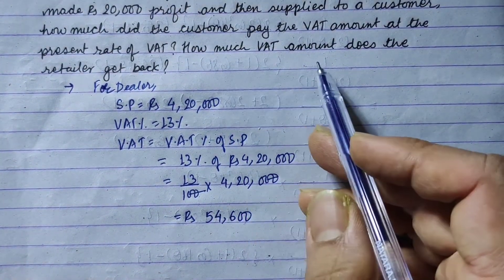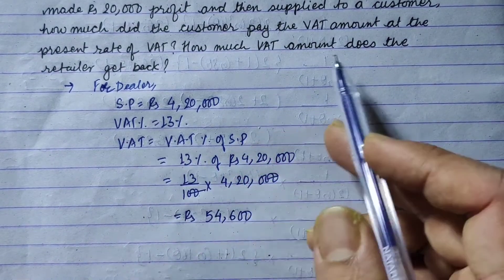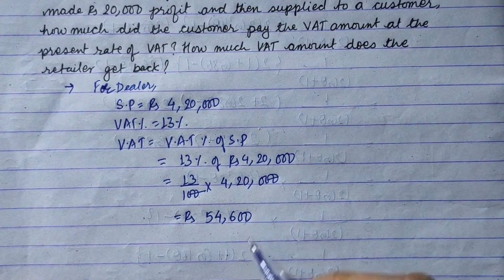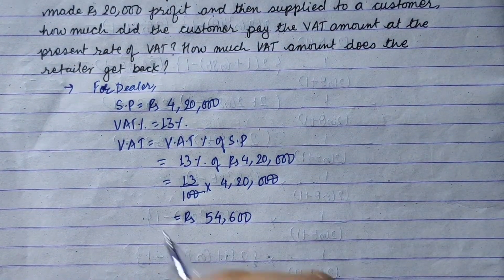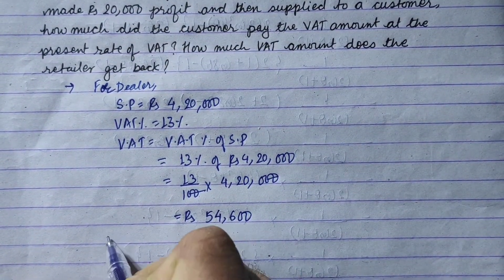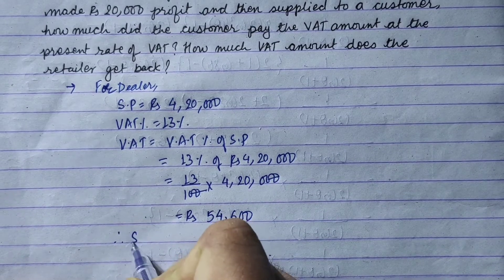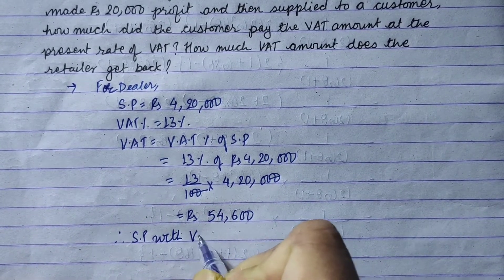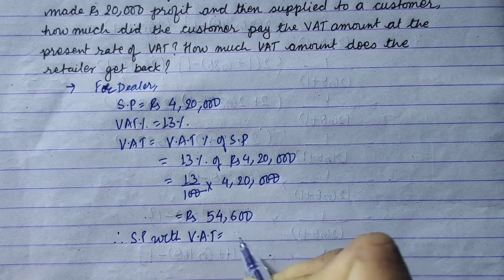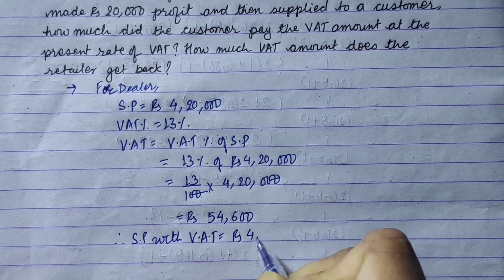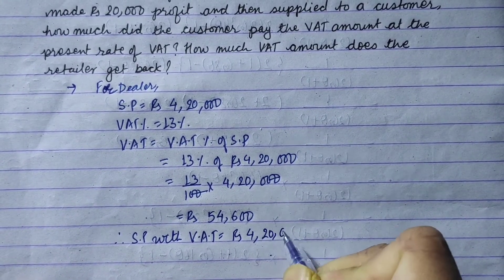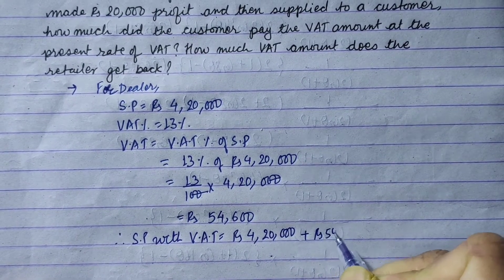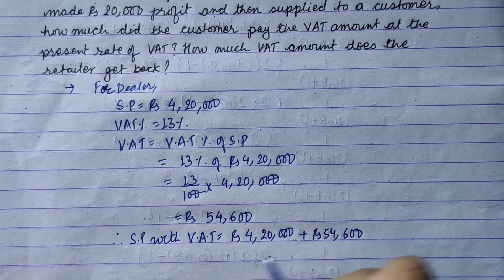Now, how much VAT amount does the retailer get back? Starting from the beginning — the retailer's selling price with VAT: rupees 4,20,000 plus rupees 54,600, giving a price of rupees 4,74,600.